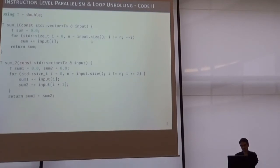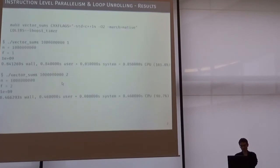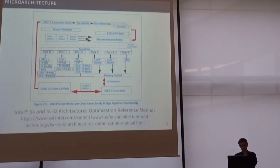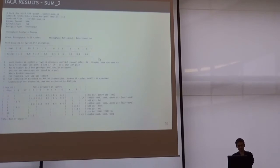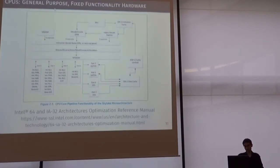We have a finite number of functional units, so if we would like to perform operations which require arithmetic operations like addition and loading data from memory, we can make them faster up to a point. We have only so many ALUs on a CPU, we have only so many load-store units, so even though we have instruction-level parallelism, the limits of that parallelism limit the concurrency we may achieve. In practice, the trade-off is that CPUs are very general purpose, but the hardware they offer is fixed functionality.